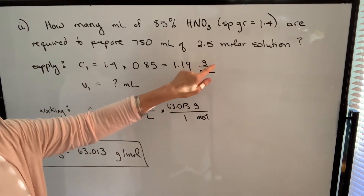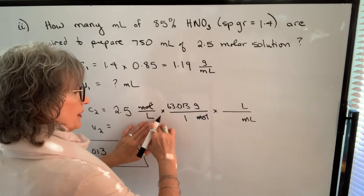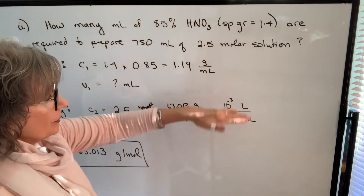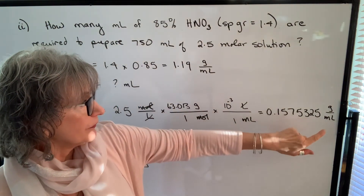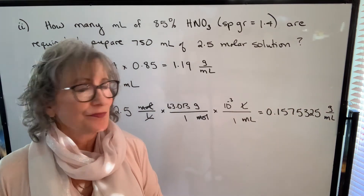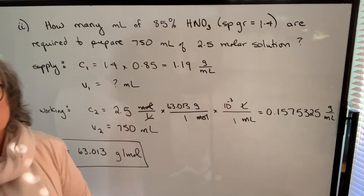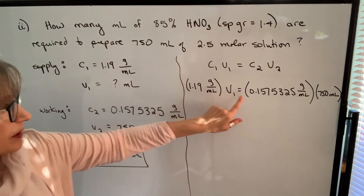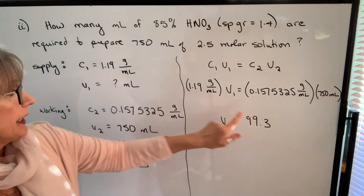That gives grams per liter, but I want grams per milliliter. Converting: 1 milliliter equals 10⁻³ liters, so liters cancel, giving 0.15753 grams per milliliter. Leave that on your calculator — don't round during calculations, only at the very end. The working solution volume is 750 milliliters. Plugging into C1V1 = C2V2 and solving for V1: multiply 0.15753 by 750 and divide by 1.19, giving 99.3 milliliters.